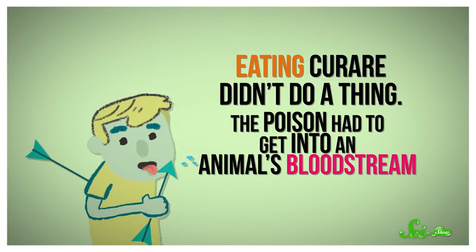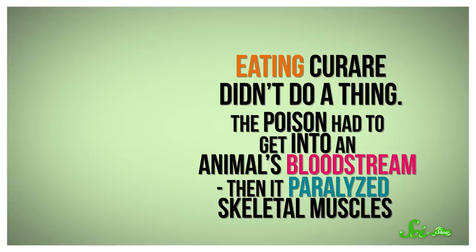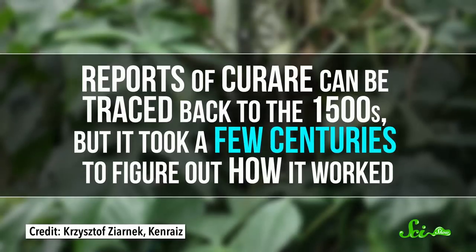The poison had to get into an animal's bloodstream, and then it paralyzed skeletal muscles, the type that help you move and breathe. But eventually, research into flying death led to the anesthesia we use during surgeries today. Reports of curare can be traced back to the 1500s, but it took a few centuries to figure out how it worked.